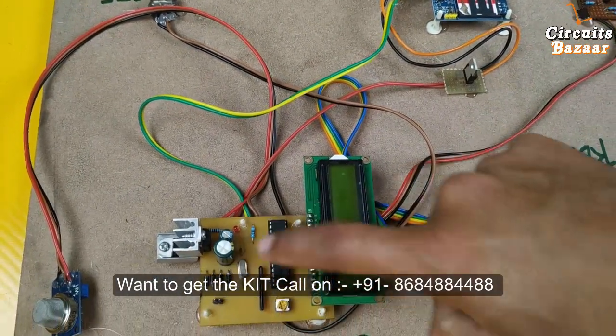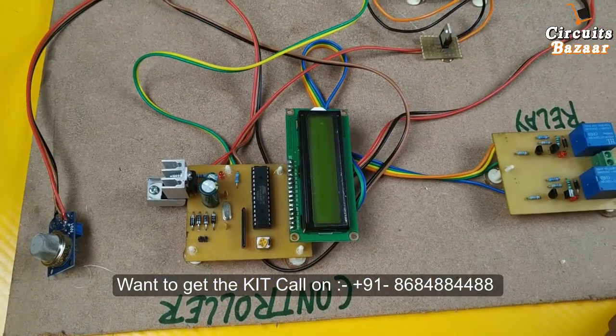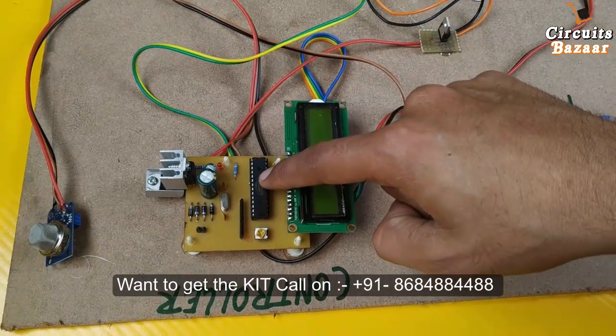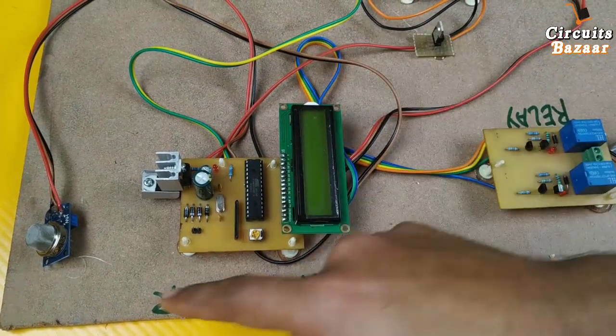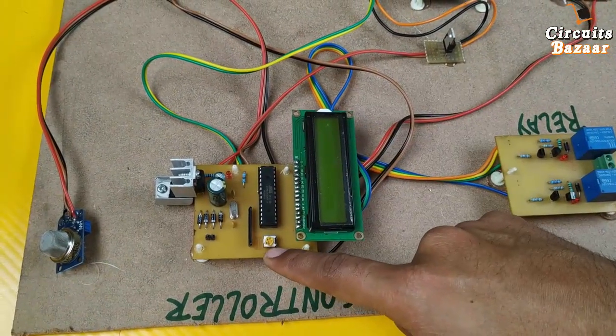This is the microcontroller which is ATmega328. This microcontroller we have programmed in Arduino. And this is the LCD which will display the pollution amount. This is the potentiometer which will set the contrast of this LCD.